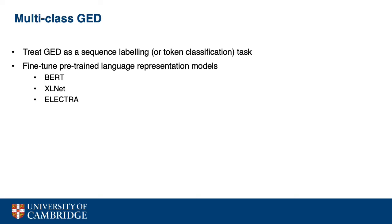Following previous work, we treat error detection as a sequence labeling or token classification task, and assign a label to each token in the input sentence, indicating whether it is correct or incorrect, or which error type it belongs to. We employ three state-of-the-art pre-trained language representation models: BERT, XLNet, and ELECTRA. Although different in their pre-training architectures, they are all transformer-based models, on top of which we add a linear classification layer. We fine-tune these models on annotated learner data for a small number of epochs.